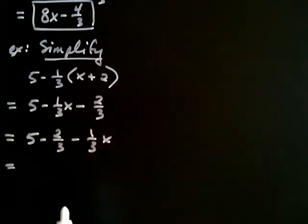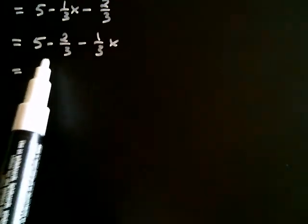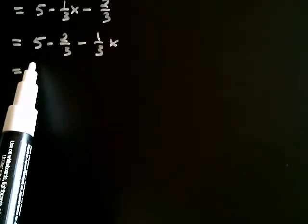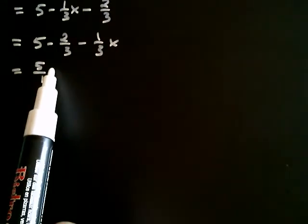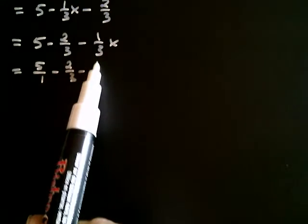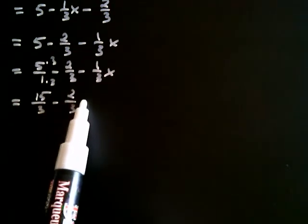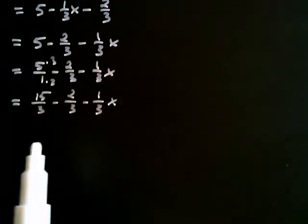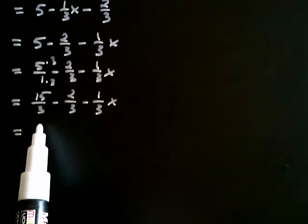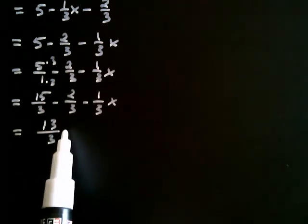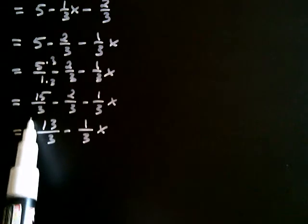The way we add fractions is by getting a common denominator. The common denominator will be 3. I think of this 5 as 5 over 1, so: 5 over 1 minus 2 thirds minus 1 third x. I get the common denominator of 3 — times 3 over 3 — so it's going to be 15 over 3, minus 2 over 3, minus 1 third x. 15 minus 2 is 13, so I get 13 over 3 minus 1 third x. That would be my answer.